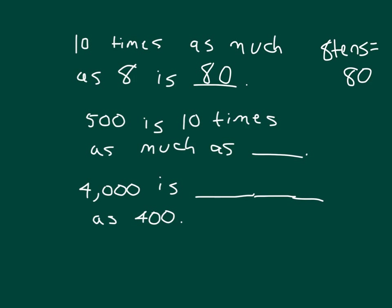500 is 10 times as much as blank. Is this blank going to be more or less than 500? It's going to be less. And it's actually 10 times less than 500, which is what? 10 times less than 500, which would be 50. Let's read that whole thing again. 500 is 10 times as much as 50, right? 10 times 50 would give you 500.